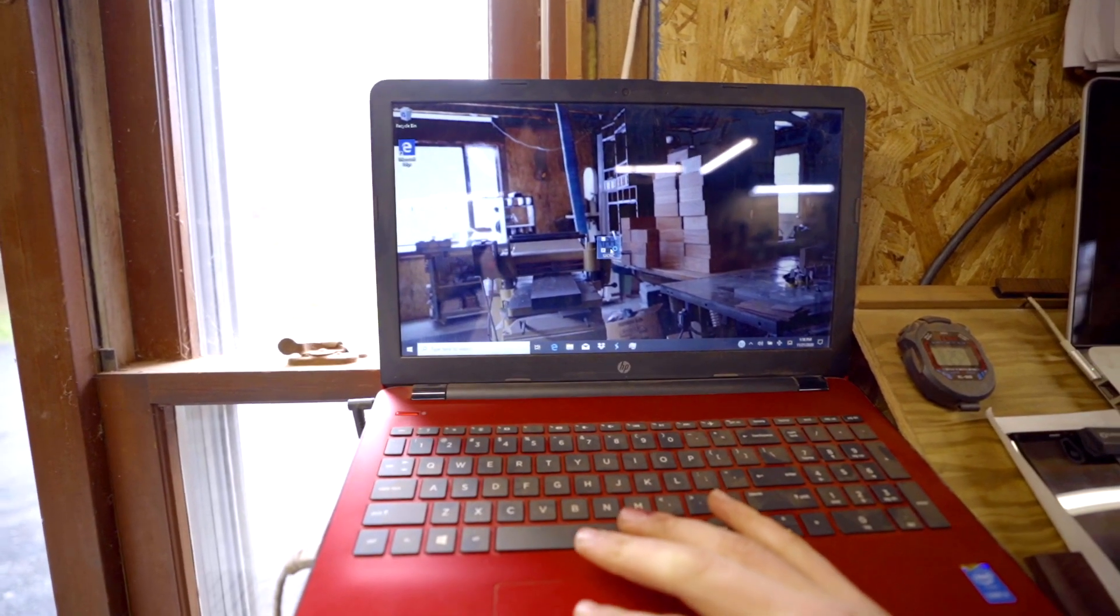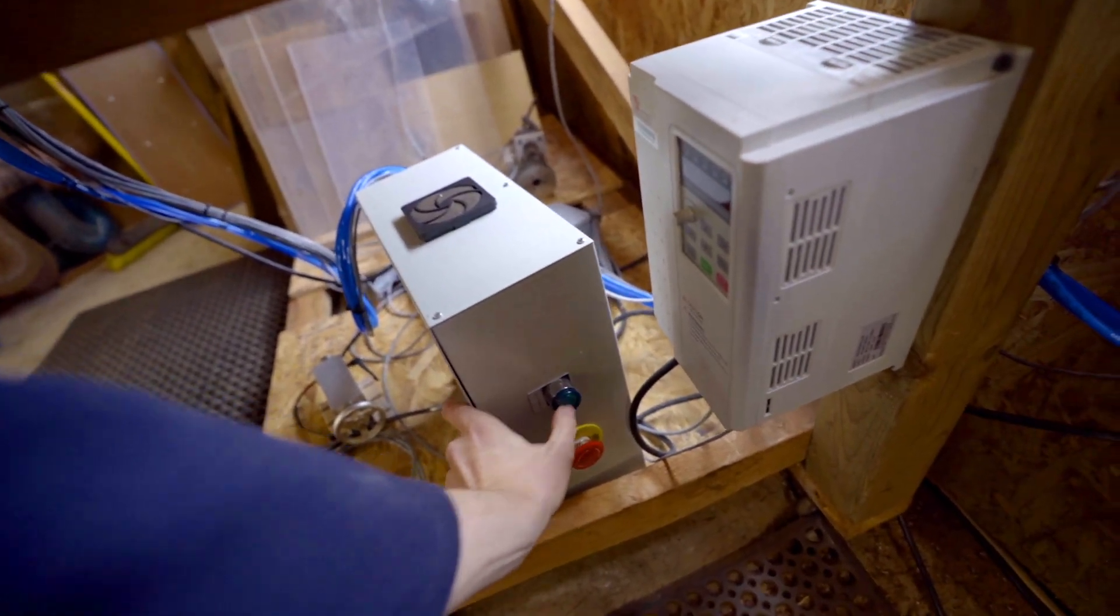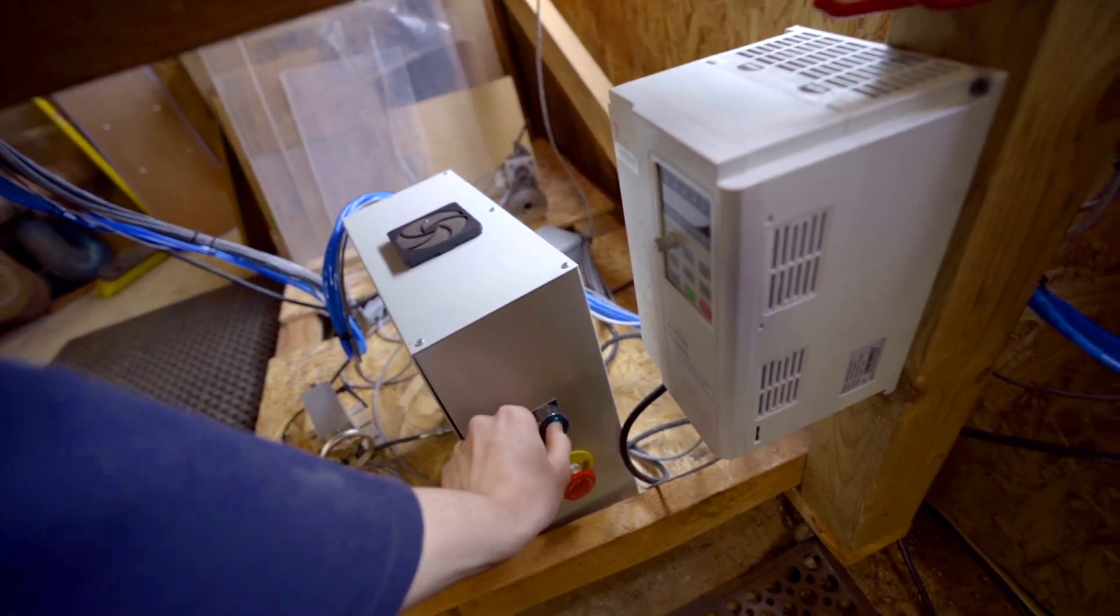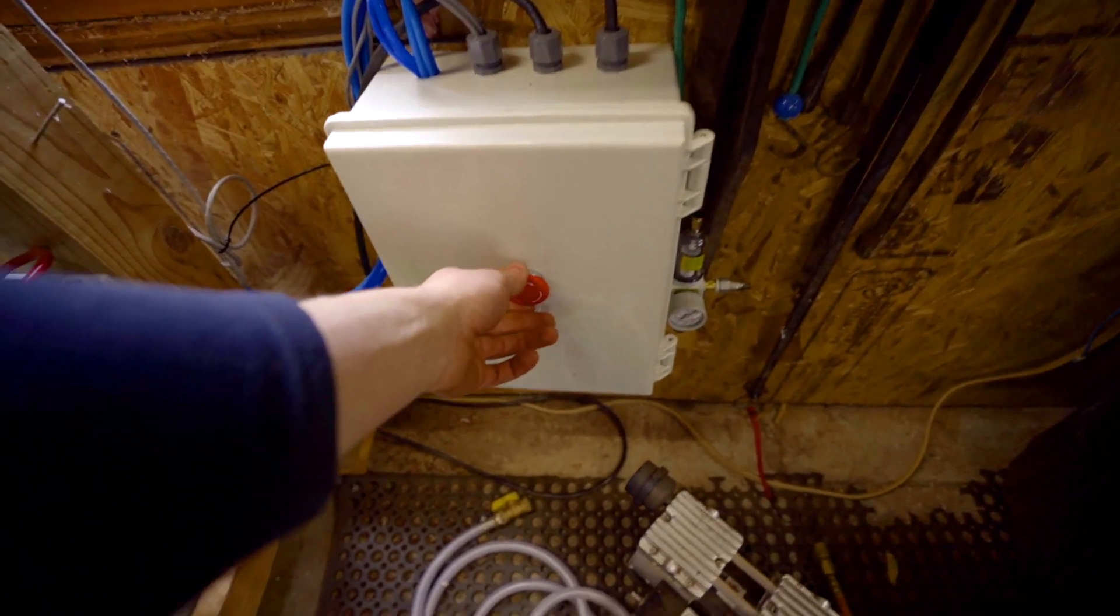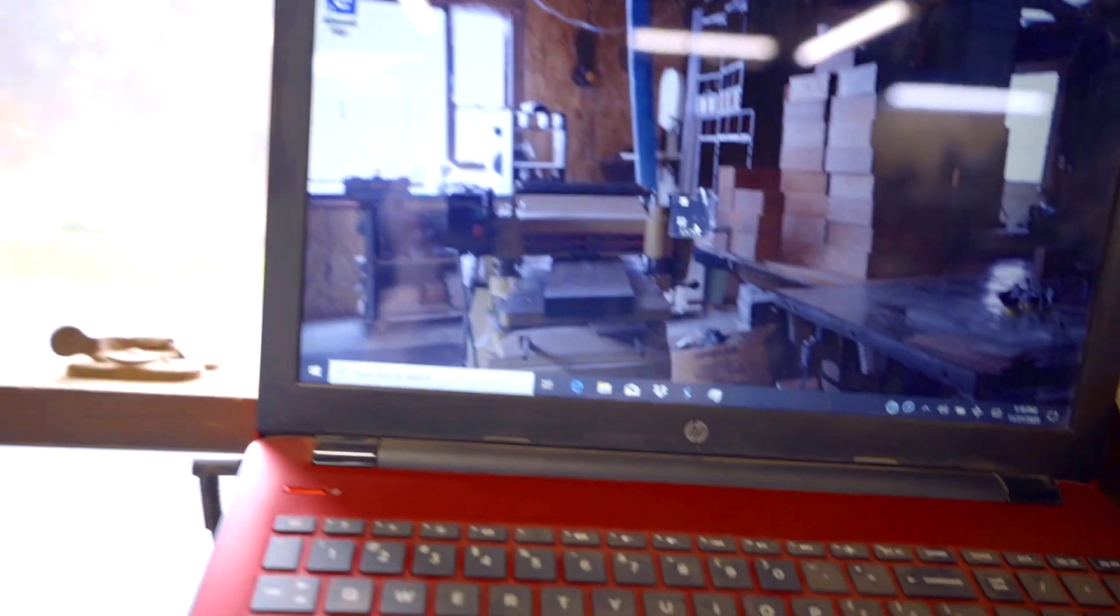First thing we do is turn this on here. We can turn on the power for the spindle as well as the air. Actually we'll turn that off just because it's a little bit loud with the fan up there. So we open up this S3 CNC software that we use and I'll show you real quick how we do a tool change.